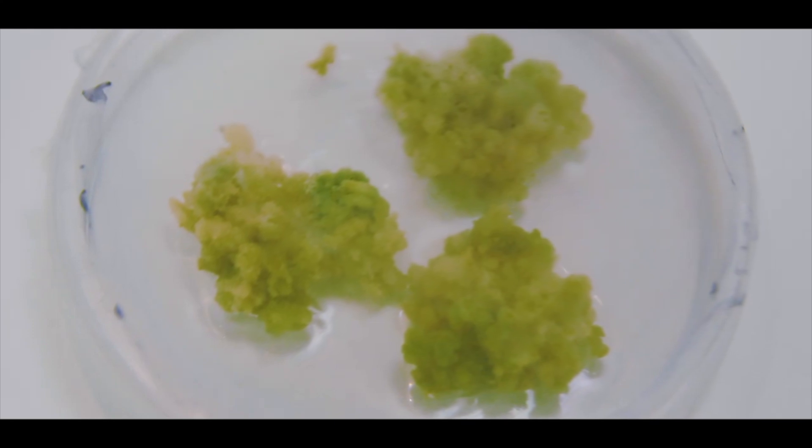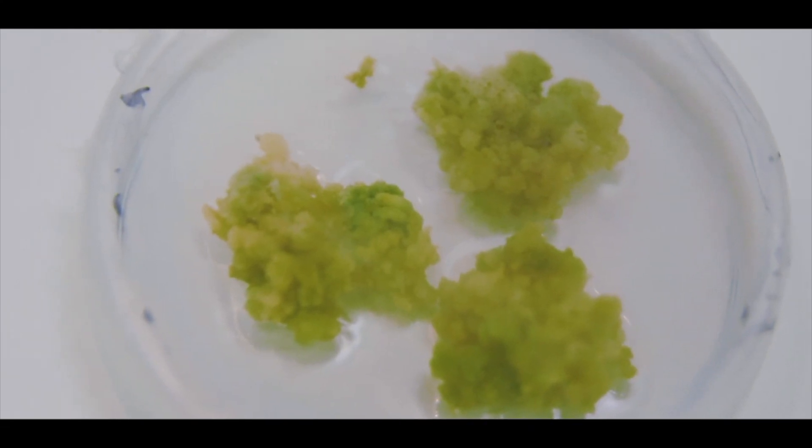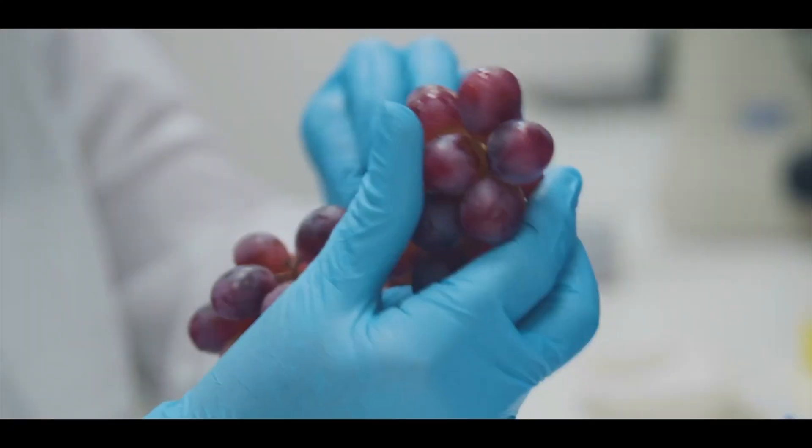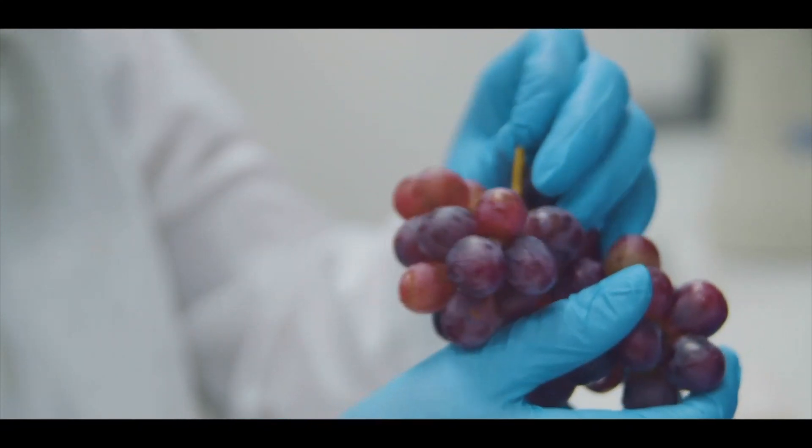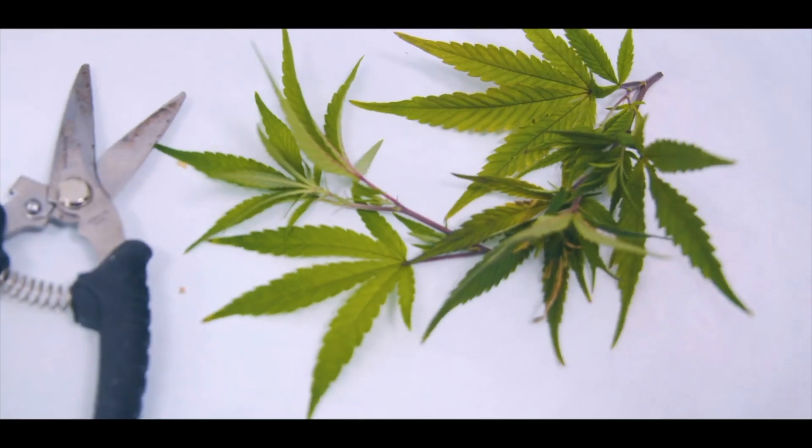These cells grown in the petri dish now constitute the cell bank. At this stage we have total independence of the mother plant and we will never use it again.